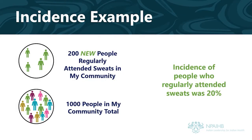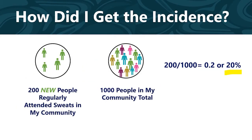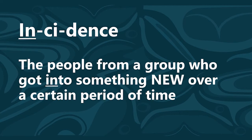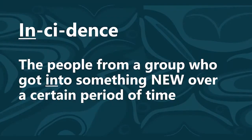Let's break that down further. I divided 200 new attendees in 2018 by 1,000 community members in 2018, which equals 0.2 or 20%. An easy way to remember incidence is to think "in-cidence."